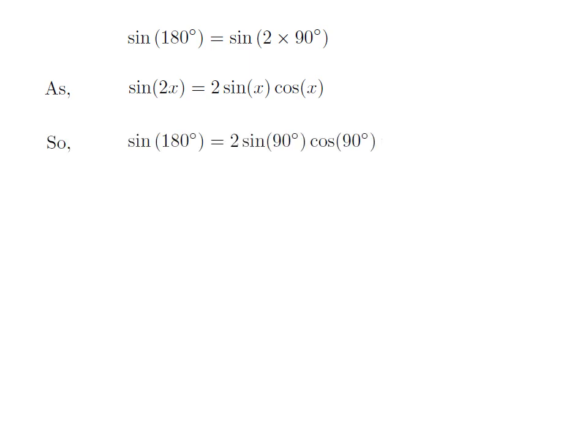Let us apply this identity to the expression of sin(180°). So sin(180°) = 2sin(90°)cos(90°).